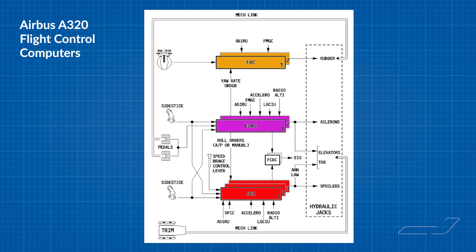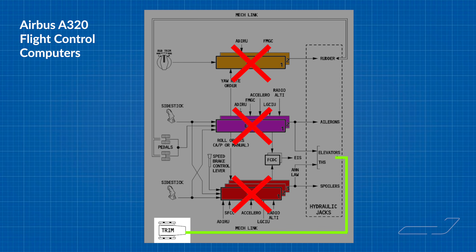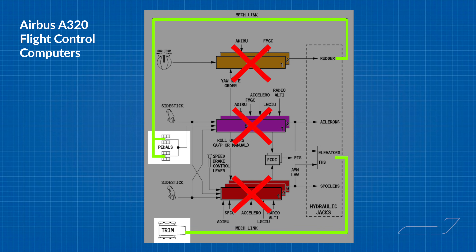In the extremely unlikely case of a total failure of all flight control computers, we'd still have the trim wheel for pitch and the rudder for yaw. Not much, but enough to control the plane. So in that very unlikely event, the pitch trim and rudder are then moved mechanically — like on the Boeing. That's correct, it's the last resort.